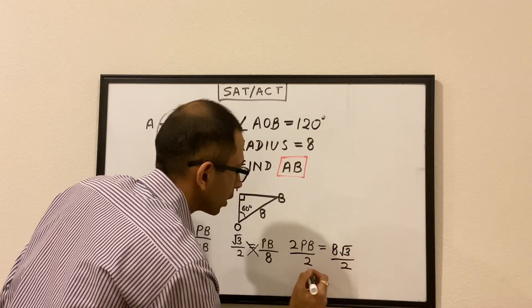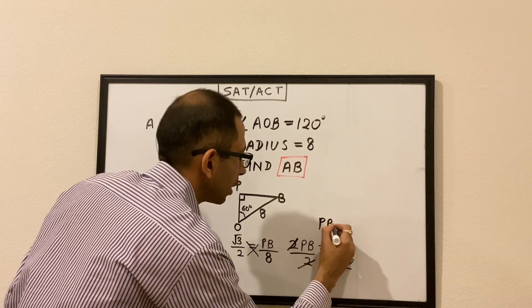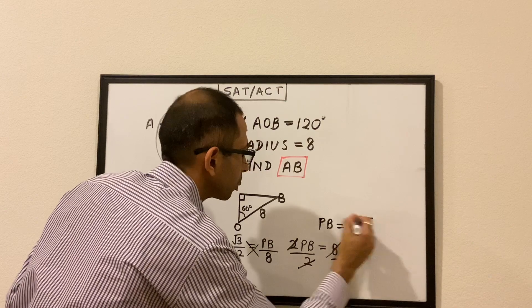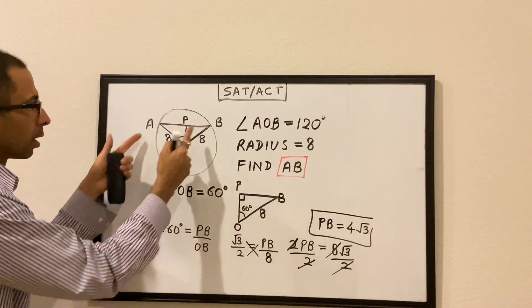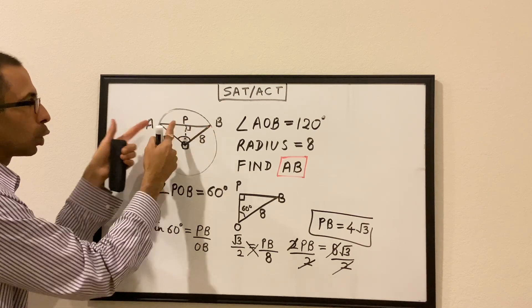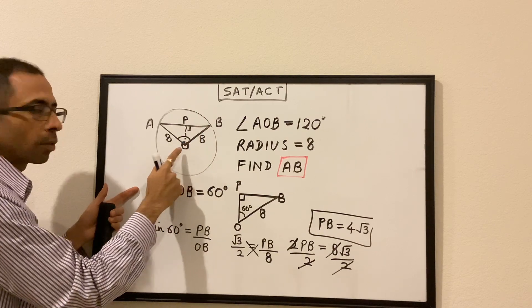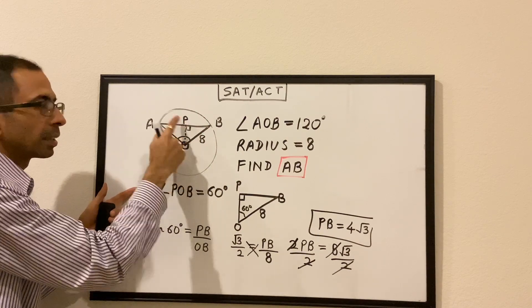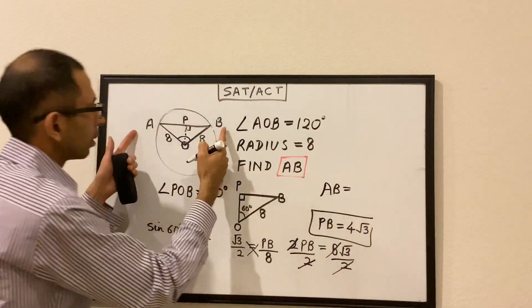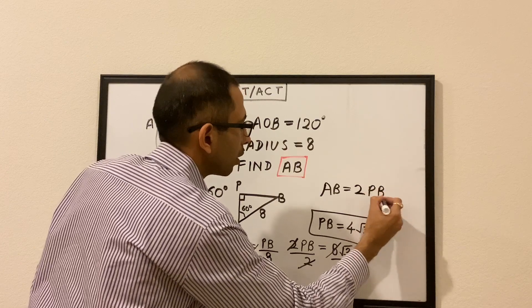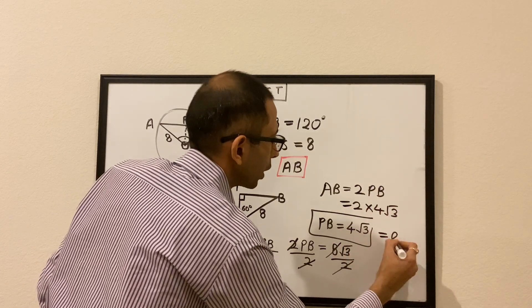We divide both sides by 2 and get PB equals 4 root 3. The full length AB will be twice of PB, because in an isosceles triangle the perpendicular from a vertex to the opposite side bisects that side as well. So AB equals 2 times 4 root 3, which equals 8 root 3.